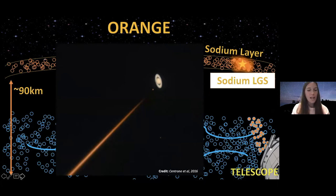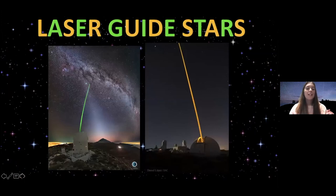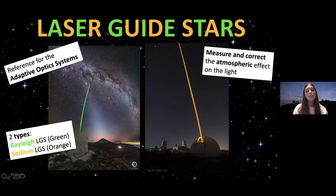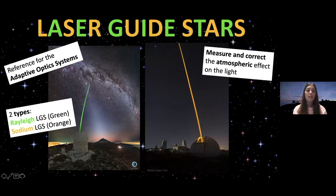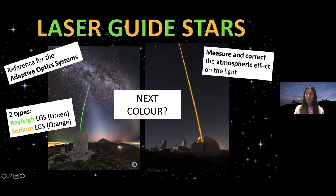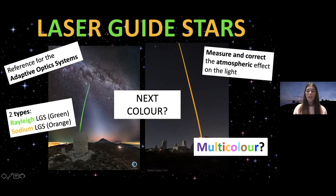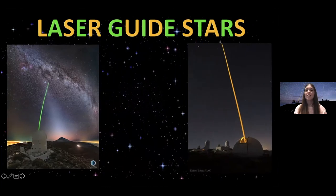That's pretty cool. This is our second type — what we call the sodium laser guide star. So basically, laser guide stars are used as a reference for adaptive optics systems. They measure and correct the atmospheric effect on light. There are two types: the Rayleigh laser guide star generated using a green laser, and the sodium laser guide star using an orange laser. So can anyone guess what the next color of laser guide star might be? Maybe a multi-color one — and this is actually not far from reality. Stay tuned for future talks about laser guide stars to find out about the next generation.